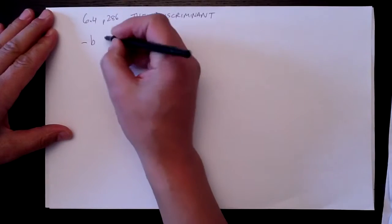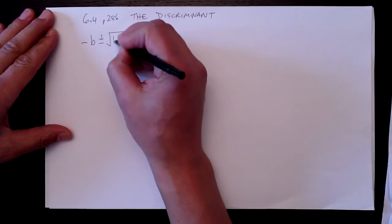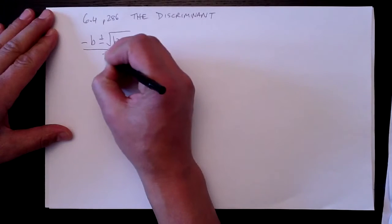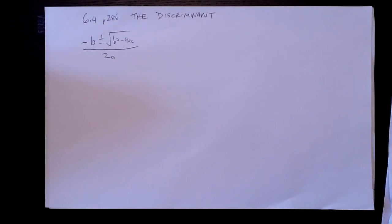Minus b, say this with me, minus b plus or minus root b squared minus 4ac over 2a. That you know as the quadratic formula.